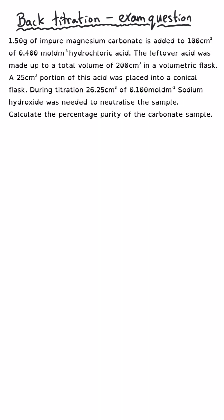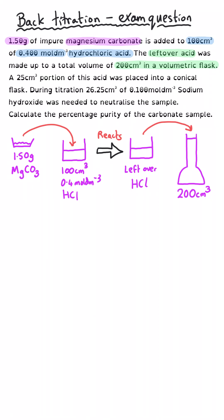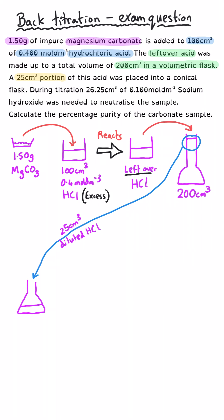We'll finish with an exam-style question. My strong advice is to draw diagrams of what's described in the text to help make sense of what's happening and clarify what you need to do next in your calculations. 1.50 g of impure magnesium carbonate solid is added to 100 cm³ of 0.400 mol dm⁻³ hydrochloric acid. The leftover acid is made up to a total volume of 200 cm³ in a volumetric flask.